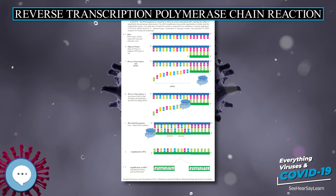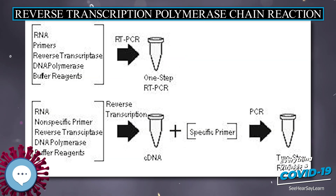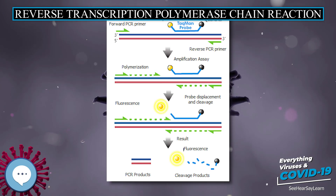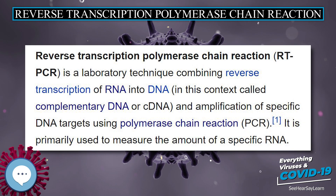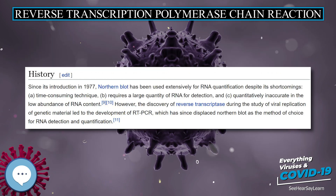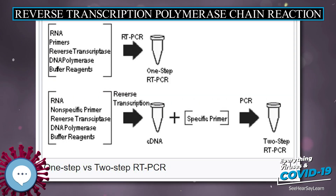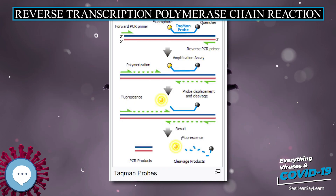Reverse Transcription Polymerase Chain Reaction, RT-PCR, is a laboratory technique combining reverse transcription of RNA into DNA — in this context called complementary DNA or cDNA — and amplification of specific DNA targets using polymerase chain reaction, PCR. It is primarily used to measure the amount of a specific RNA. This is achieved by monitoring the amplification reaction using fluorescence, a technique called real-time PCR or quantitative PCR, qPCR.